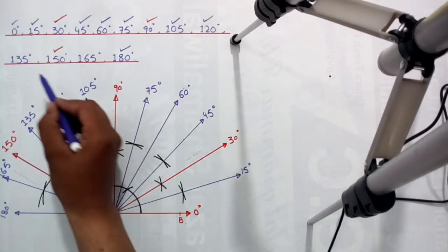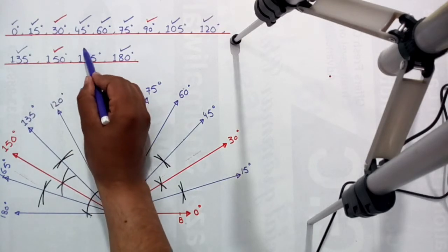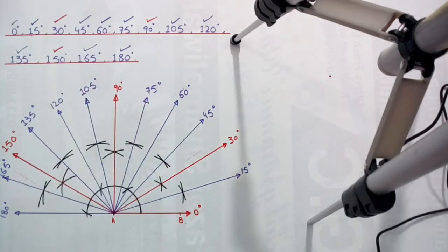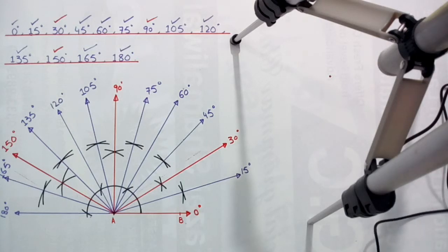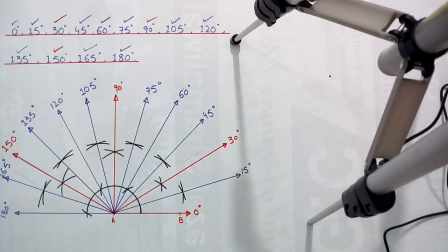So 135 degrees has been drawn, 165 degrees has also been drawn, and all the angles have been drawn with the help of a compass. Please subscribe to our channel to be updated about educational videos. Thank you.